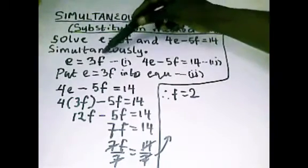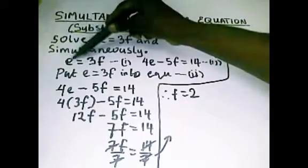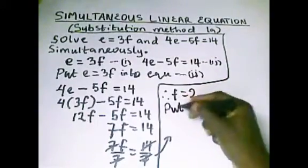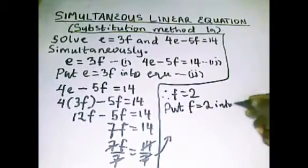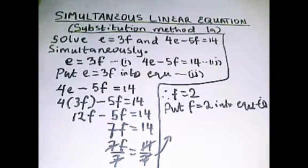So we have gotten the value for f. Now we get the value for f, and if you come back to where we started from, you will see that we can easily get the value for e because e here is already on its own.